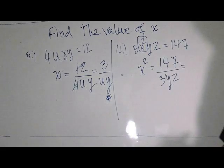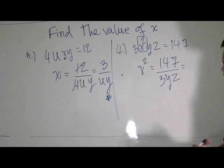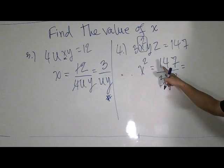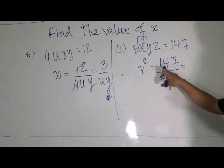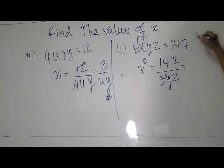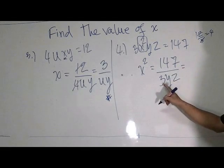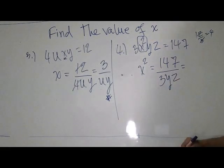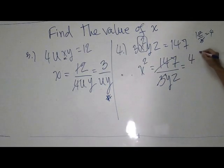147 can divide by 3. How do we check it? You can add 1 and 4 and 7. 8 and 4, we have 12. 12 can divide by 3. So, 147 can divide by 3. The result is 49.